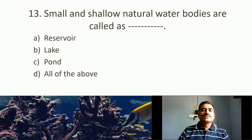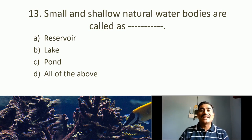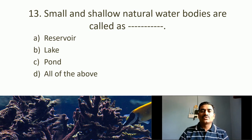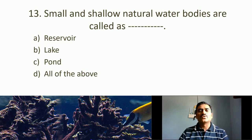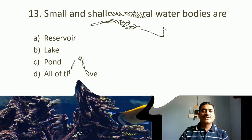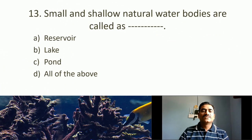Thirteenth MCQ: Small and shallow natural water bodies are called what? Options: reservoir, lake, pond, none. A reservoir is a large water body; a lake is also a larger body. Small and shallow water bodies are ponds — depth is also very less. The correct answer is pond.